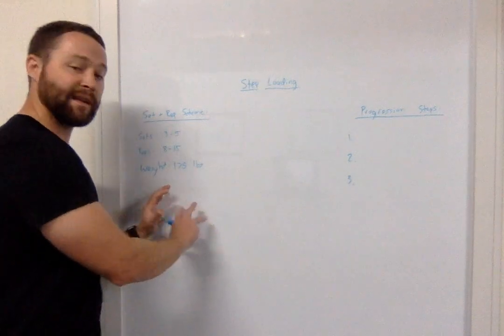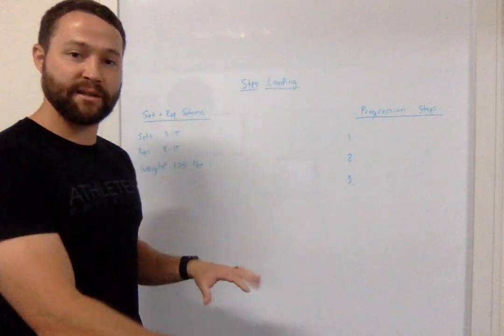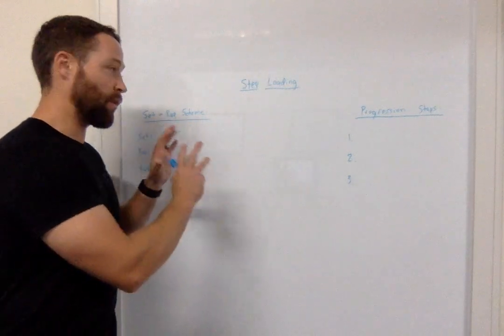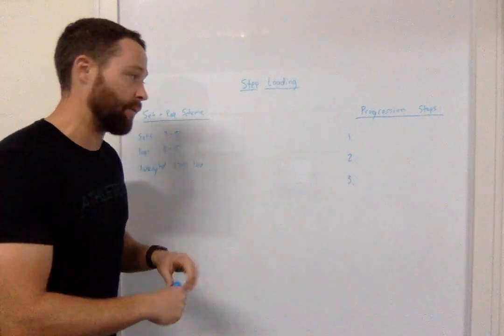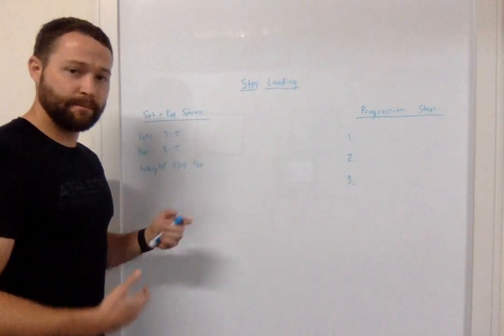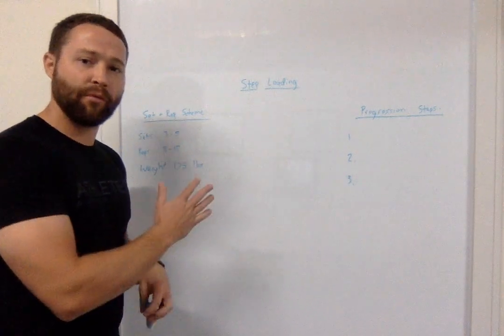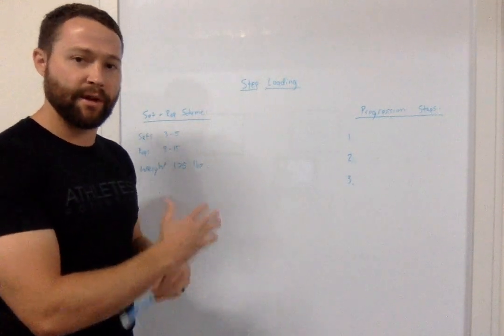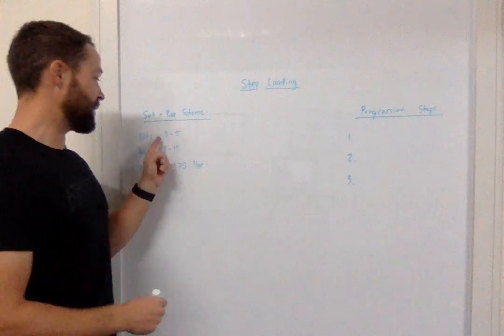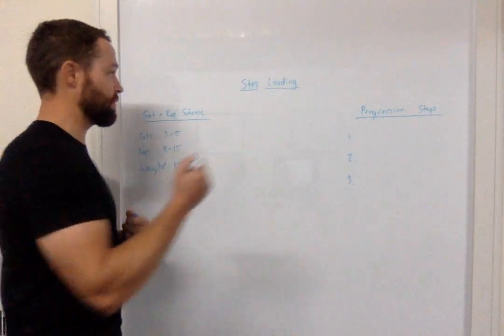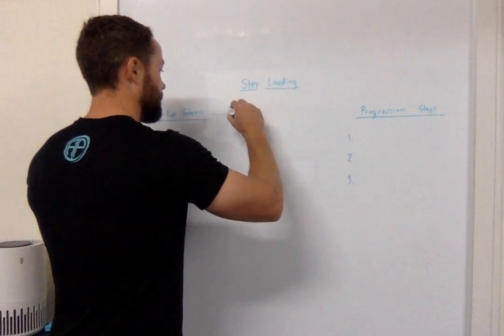Now this is the first step in going through the step loading process is figuring out where we need to start and what process we're going to use to go through. Now once we have this our first step is starting off at the very bottom rung of this progression ladder. So for this example that'll be three sets of eight reps. So I'm going to put that up here. Three sets of eight.